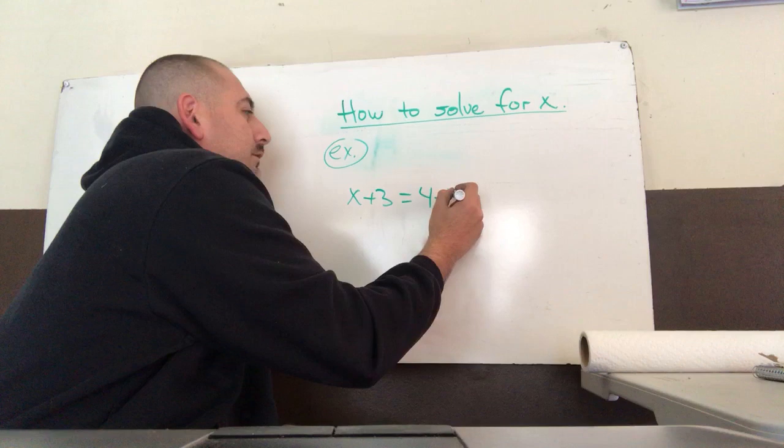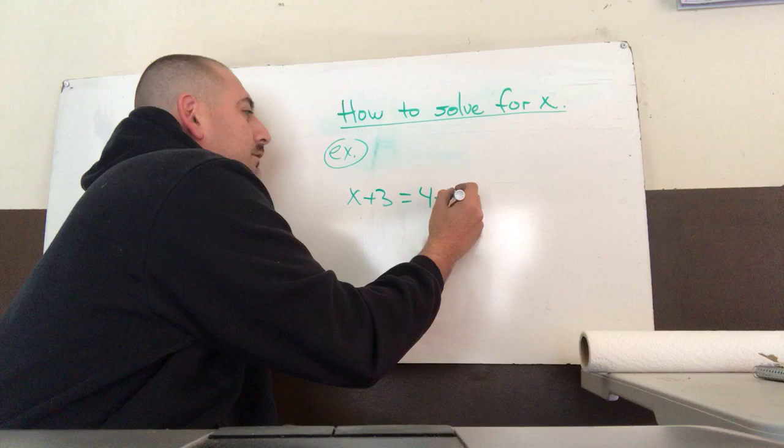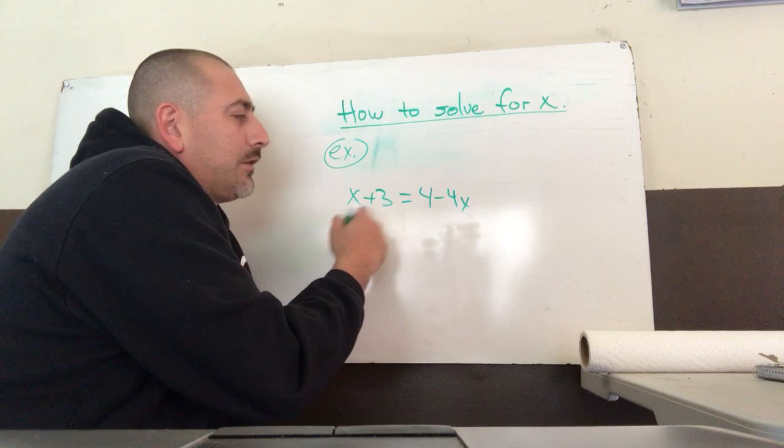3 equals 4 minus 4x. So you want to make sure that you get all the x's on one side. By looking at it, you can see that's like you have four, and that's like you have one.